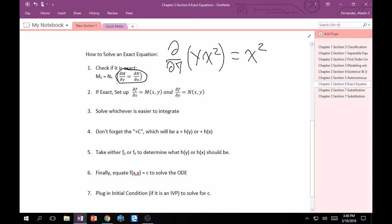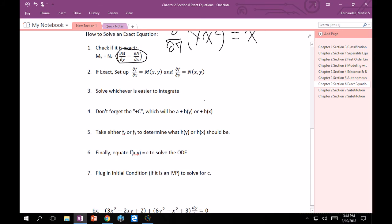So, this comes after if you make sure that my is equivalent to nx, right? So, then, after that, you check, okay. Now, the partial of our function f with respect to x has to equal our function m, and our partial of our function f with respect to y has to equal n. So, from here, you can choose whichever one is easier, whichever one looks easier to integrate between these two. Pick that one to integrate, because integration can be tricky. So, choosing the one with less polynomials or less complicated functions will serve you better.